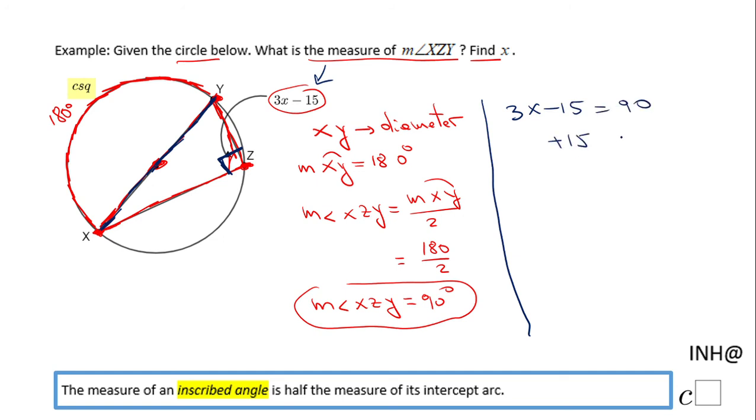So I'm going to add 15 on both sides to solve for x, and I have 3x equals 105. The last step: divide by 3, and that will be 35.